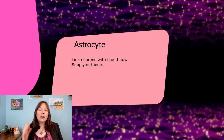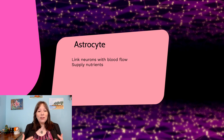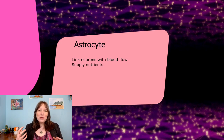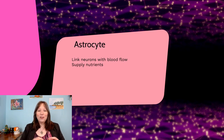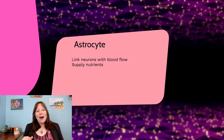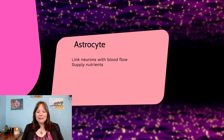The third one we're going to talk about are the astrocytes. These link neurons with the blood system. Astrocytes are pretty plentiful in our nervous system and are really important for providing nutrients — oxygen and glucose — to our nervous system, and taking away waste materials.